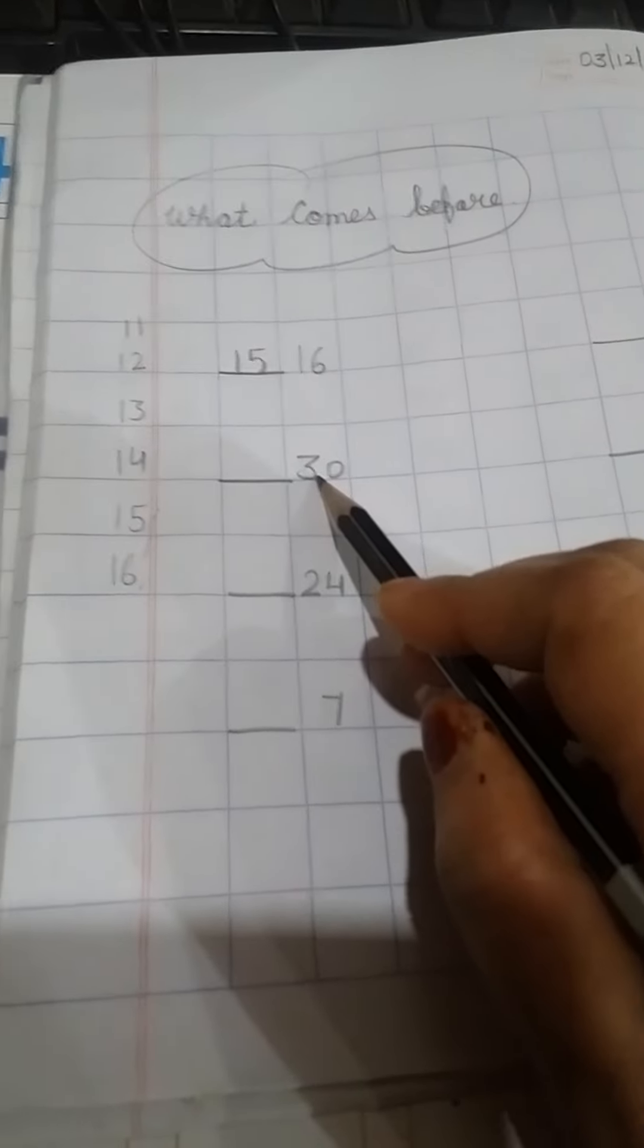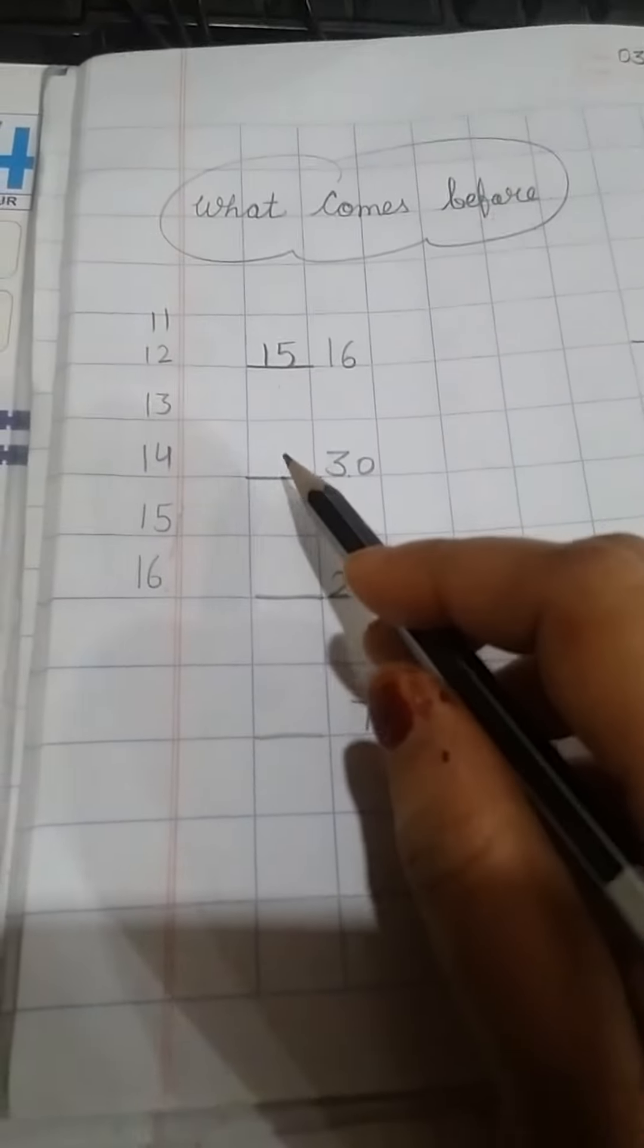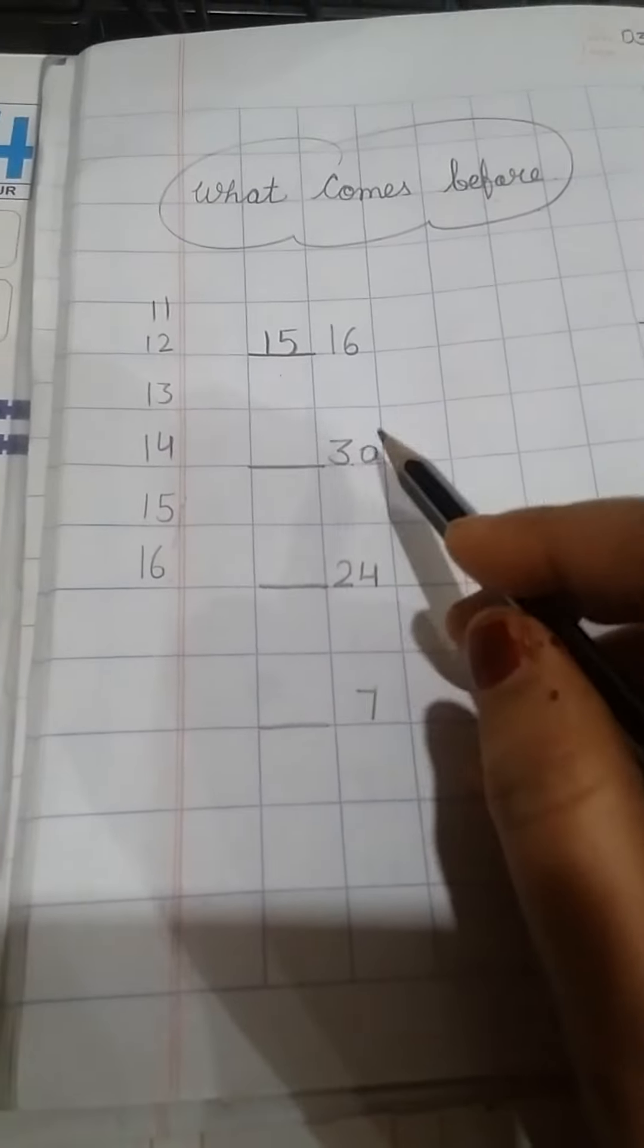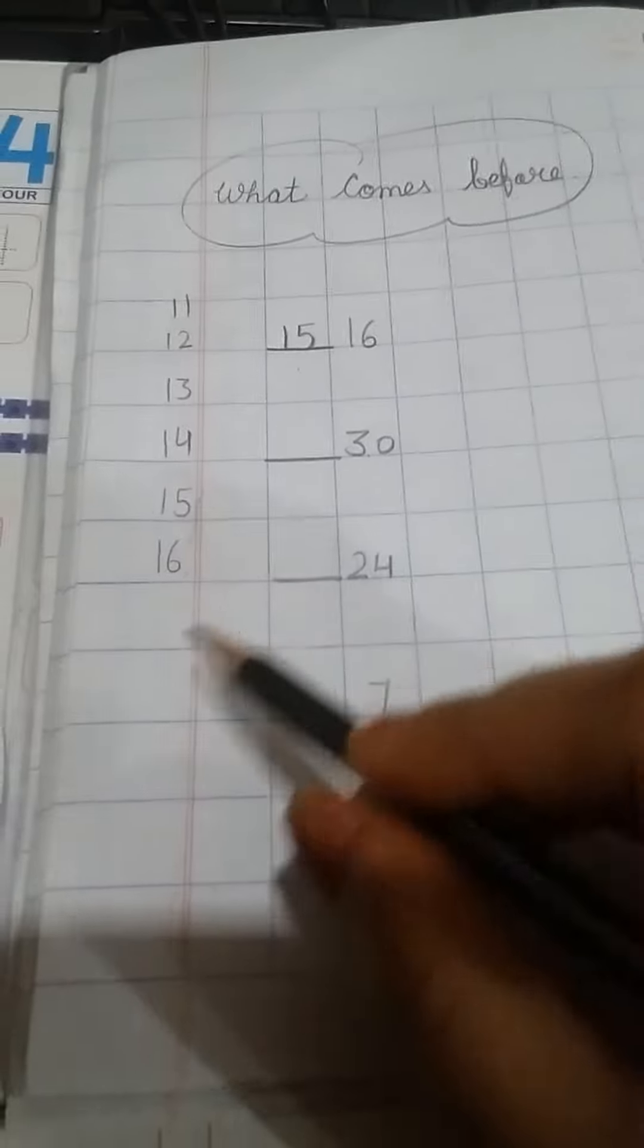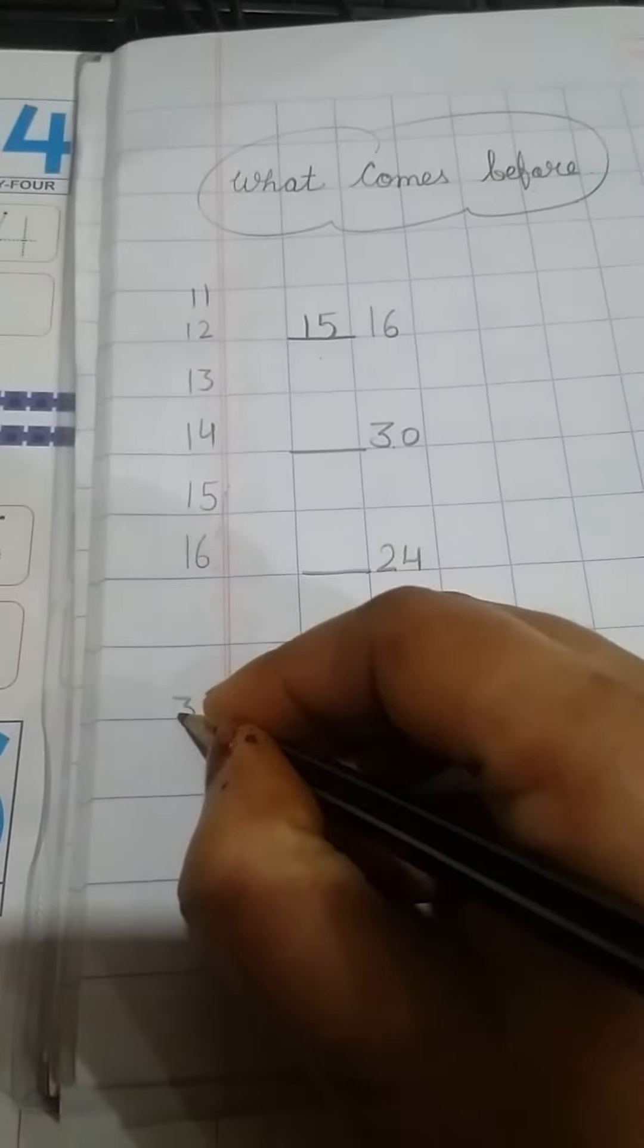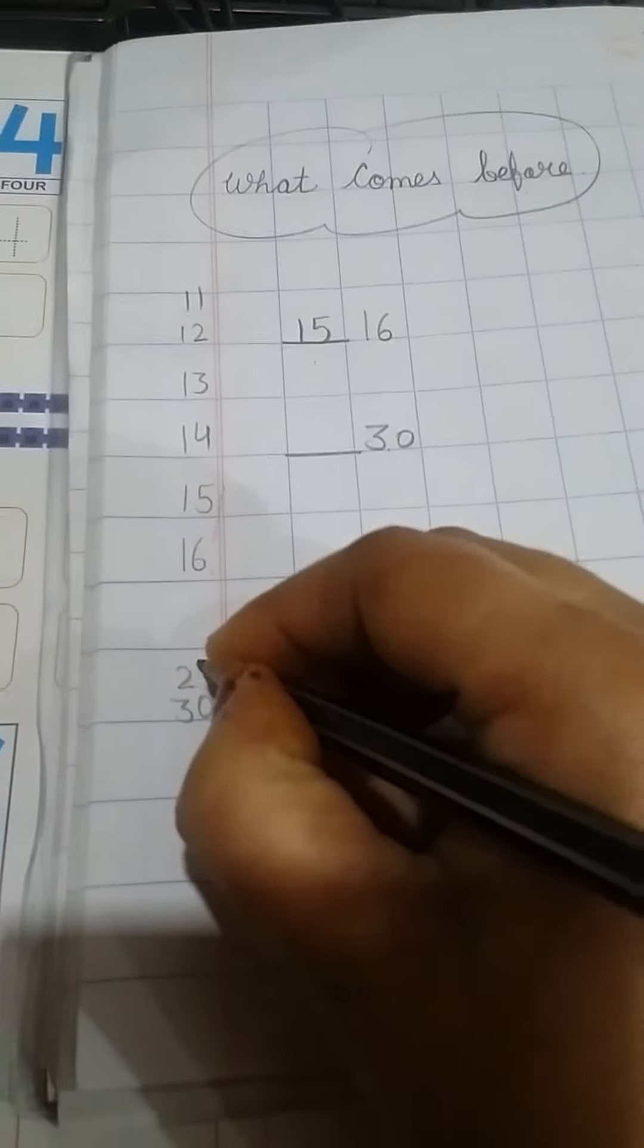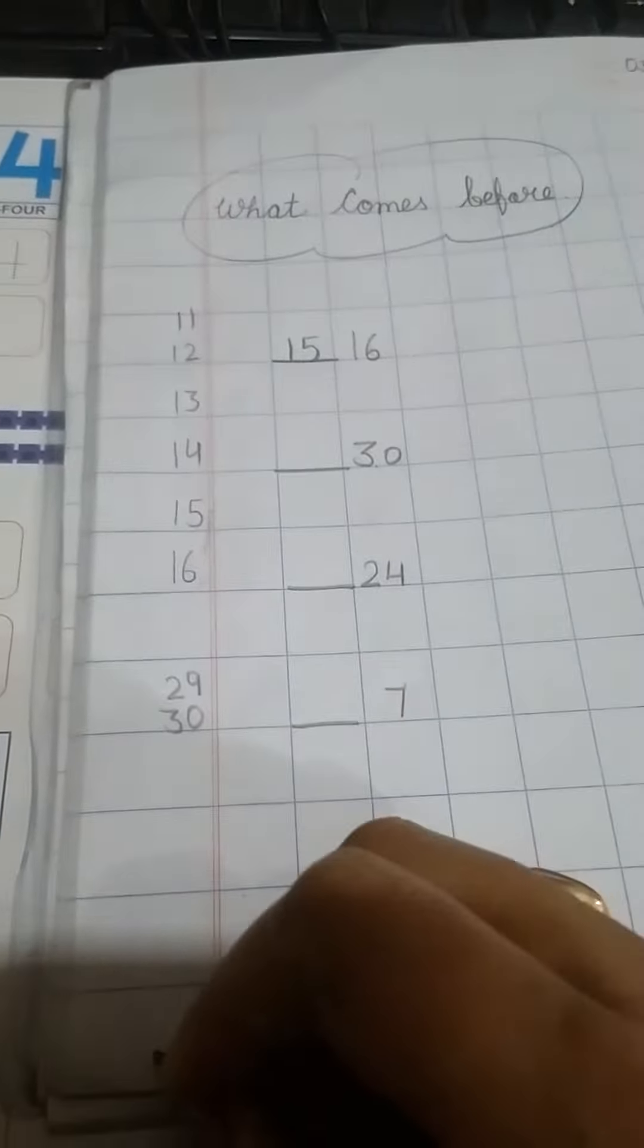This is 30 number. Which number comes before 30? 30 se pahle konsa number aayega? 20, 29, 29. Okay?